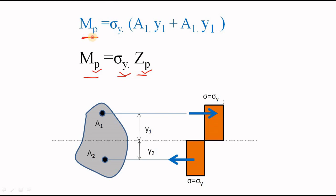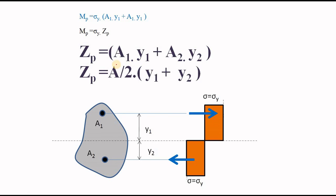Since any moment equals stress multiplied by section modulus, and this is the plastic moment with yield stress sigma-y, the modulus here is the plastic modulus ZP. Comparing the two equations and cancelling sigma-y, we get ZP = A1·y1 + A2·y2. This means the plastic section modulus is the moment of the compressed area plus the moment of the tensed area about the equal-area neutral axis. Since A1 = A2 = A/2, this simplifies to ZP = (A/2)·(y1 + y2).